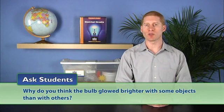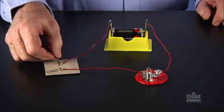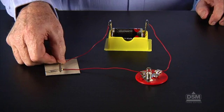Ask, why do you think the bulb glowed brighter with some objects than with others? Help students understand that some objects are better conductors that allow more of the electric current to flow than others.